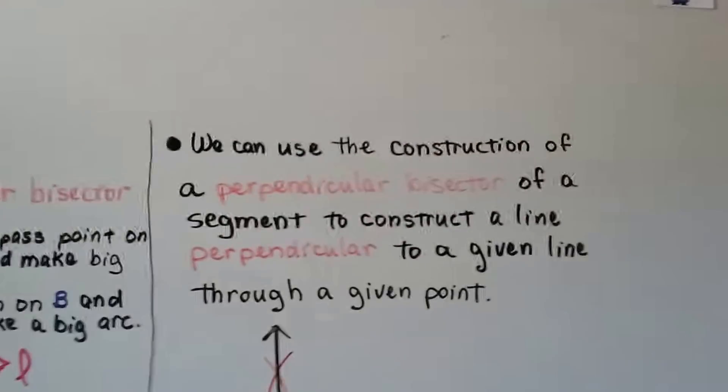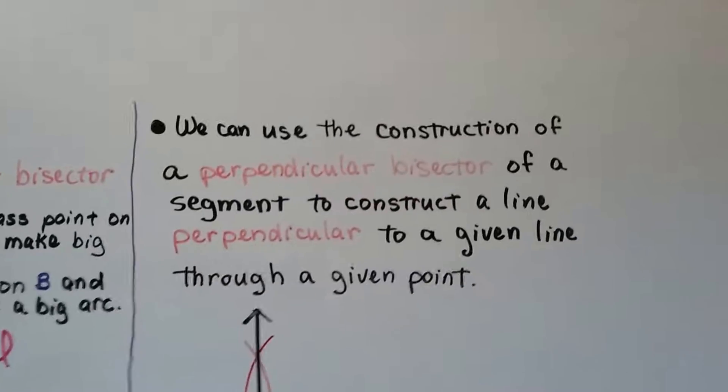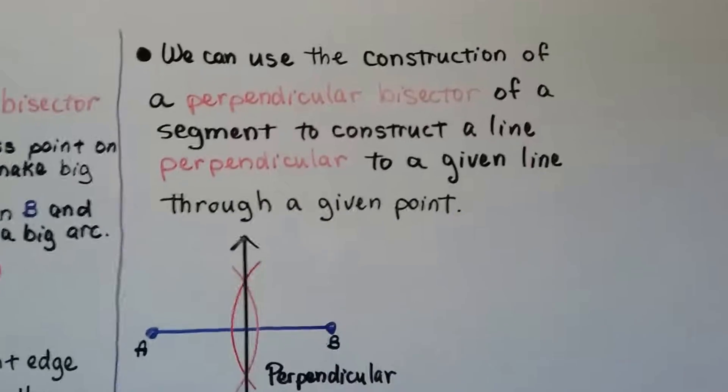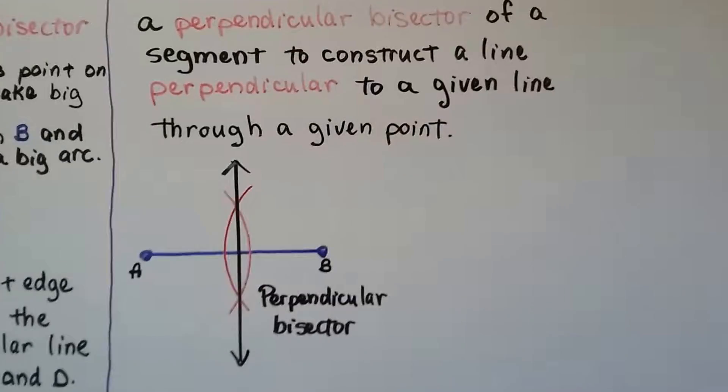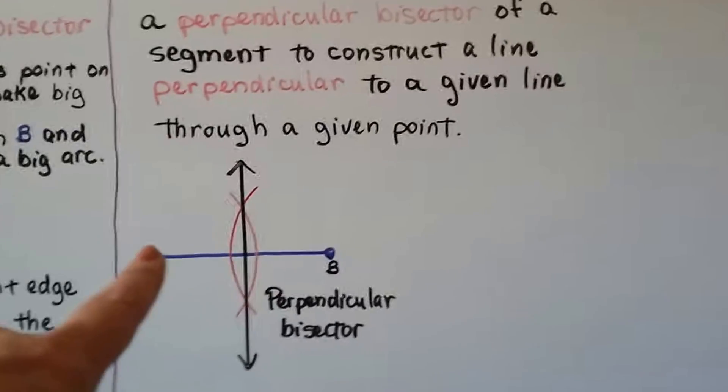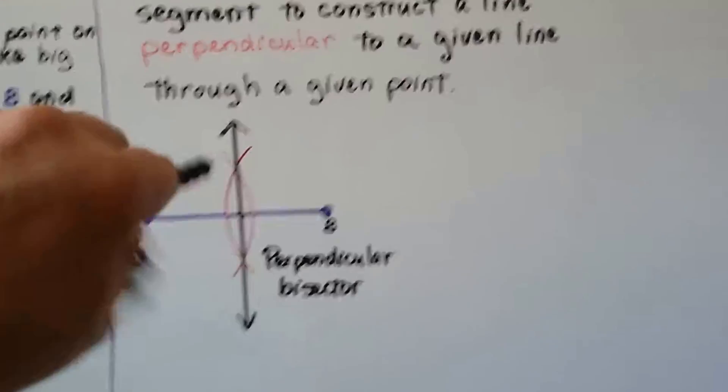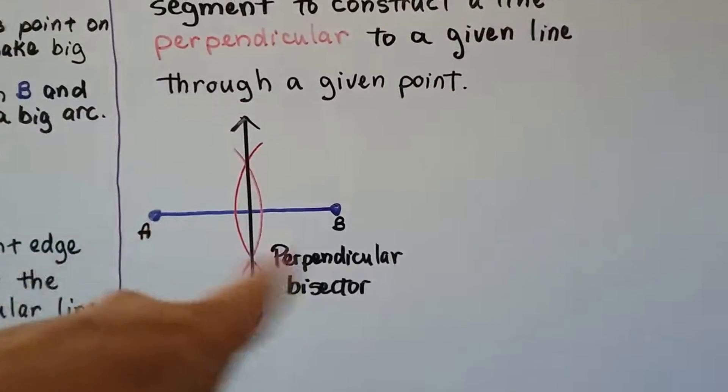We use the same construction of a perpendicular bisector of a segment to construct a line perpendicular to a given line through a given point. So for the perpendicular bisector, it gave us segment AB. So we didn't have to do that first one to find the points A and B.